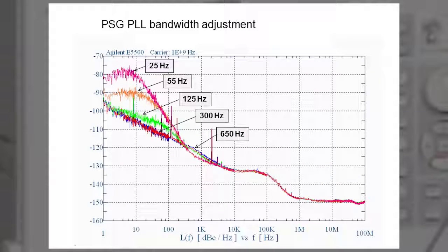In addition, you can tune the phase lock loop bandwidth in the PSG to trade off phase noise between 1 hertz and 1 kilohertz offsets.